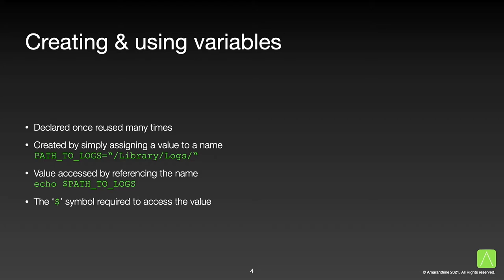Creating variables is very easy. You simply declare a name and assign it a value using the equal-to sign. For example, if we are going to be using the path to the logs folder, then storing it in a variable called path_to_logs makes sense. We would then follow it up with the equal-to sign and the path in quotes. To use this variable in a command, we would simply call out the name with the dollar symbol prefixed before it. The dollar symbol is necessary to access the value being held by the variable. While declaring variables, try to use names which explain the purpose of the variable or give more information about the content being held.